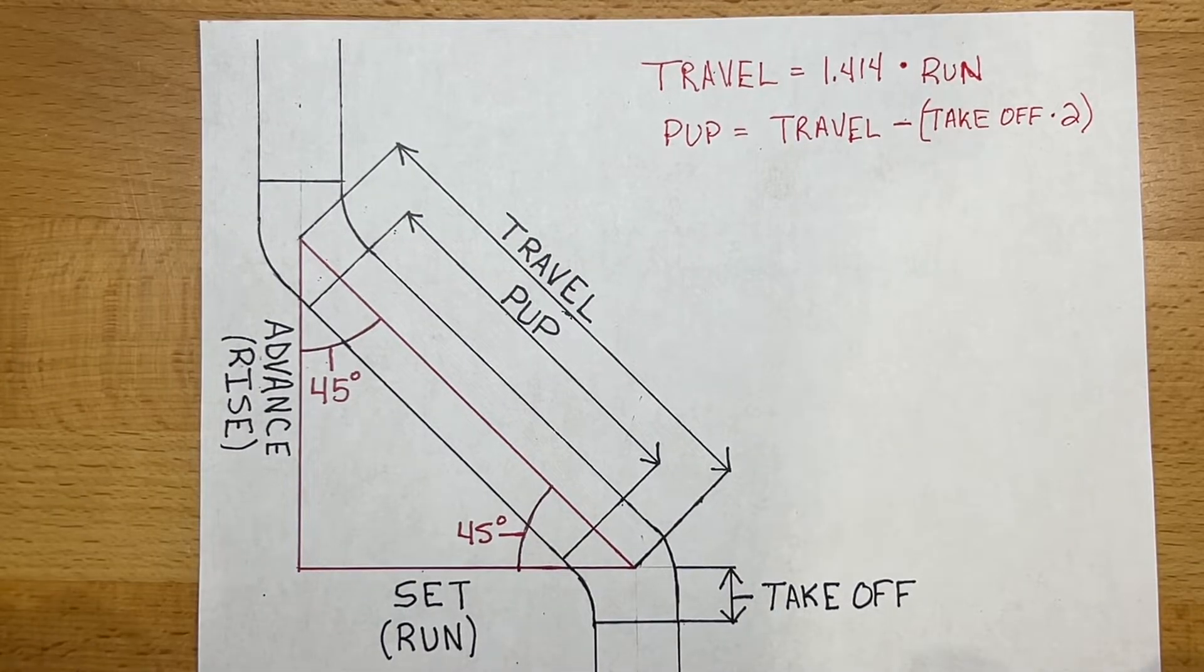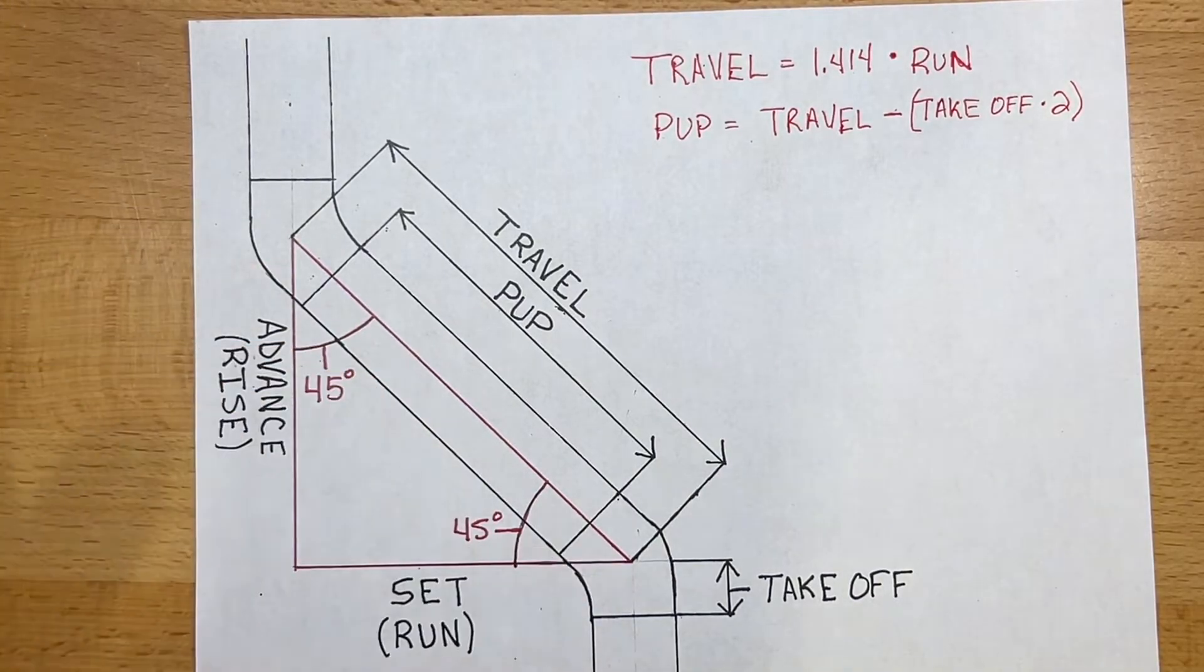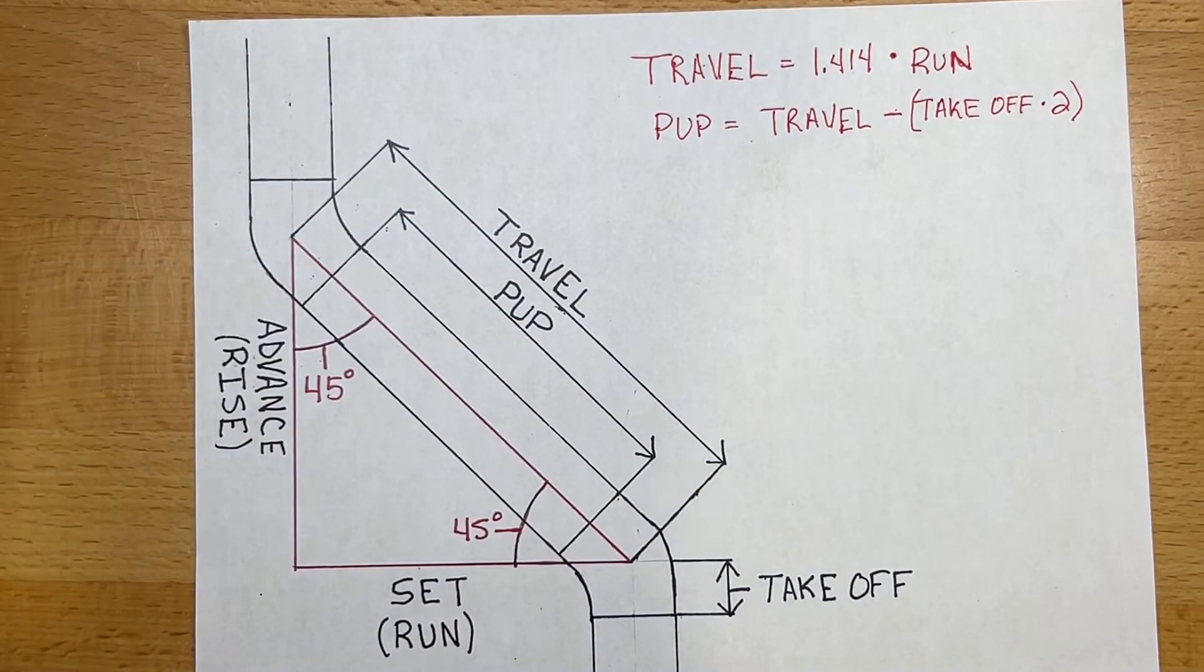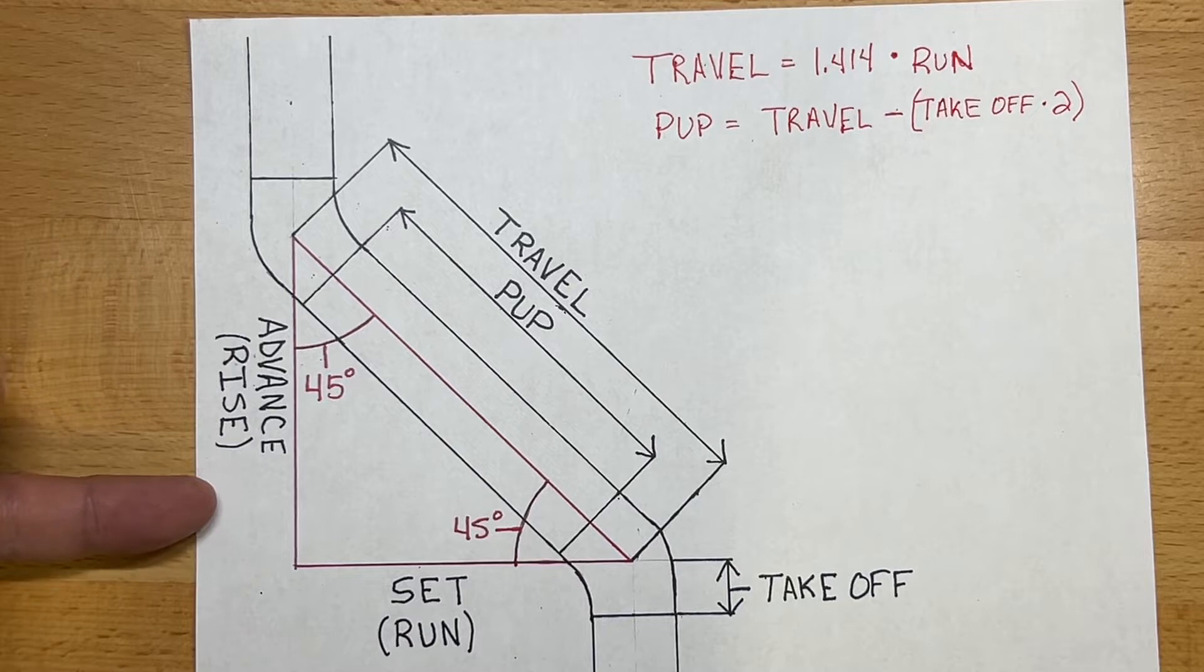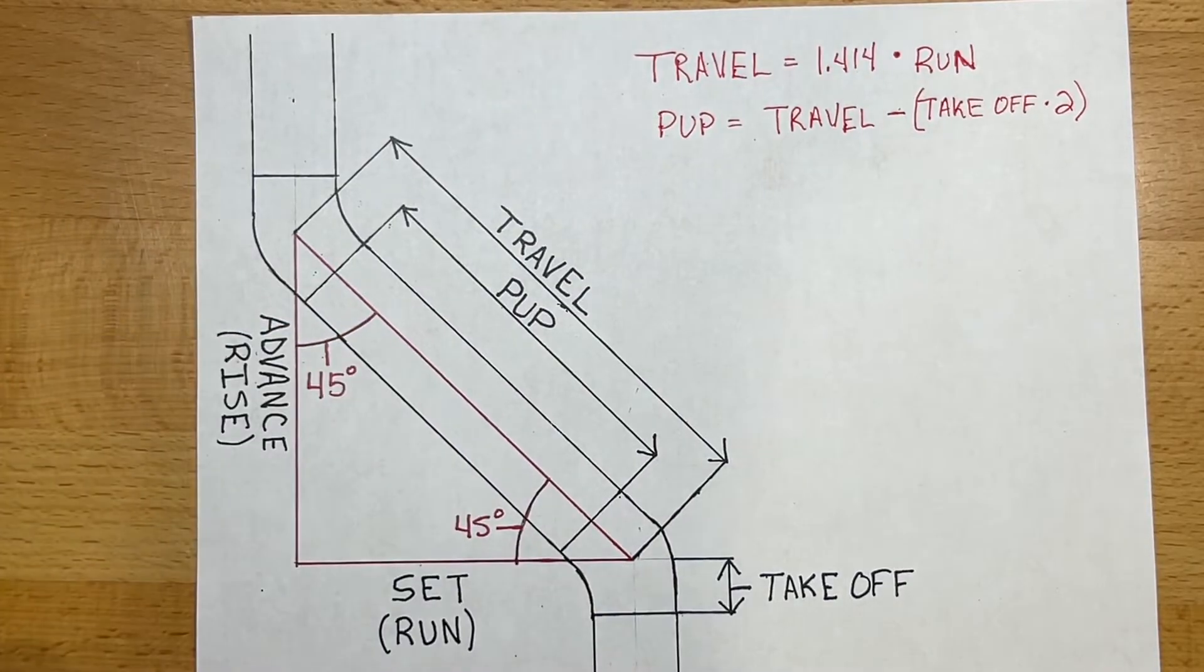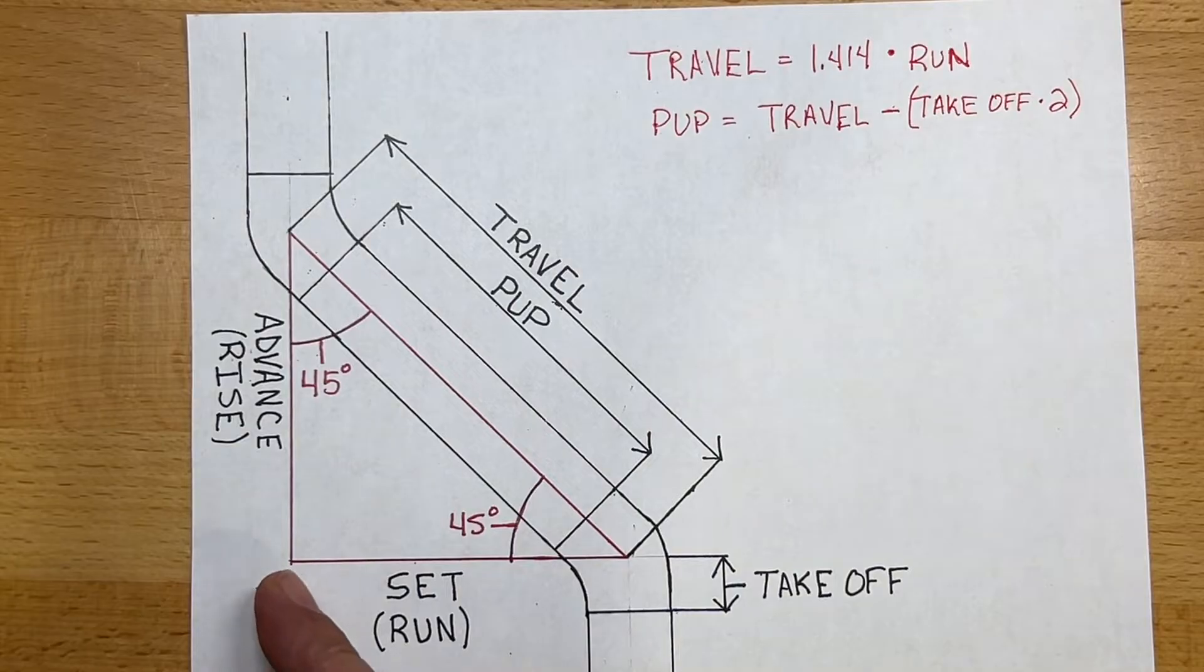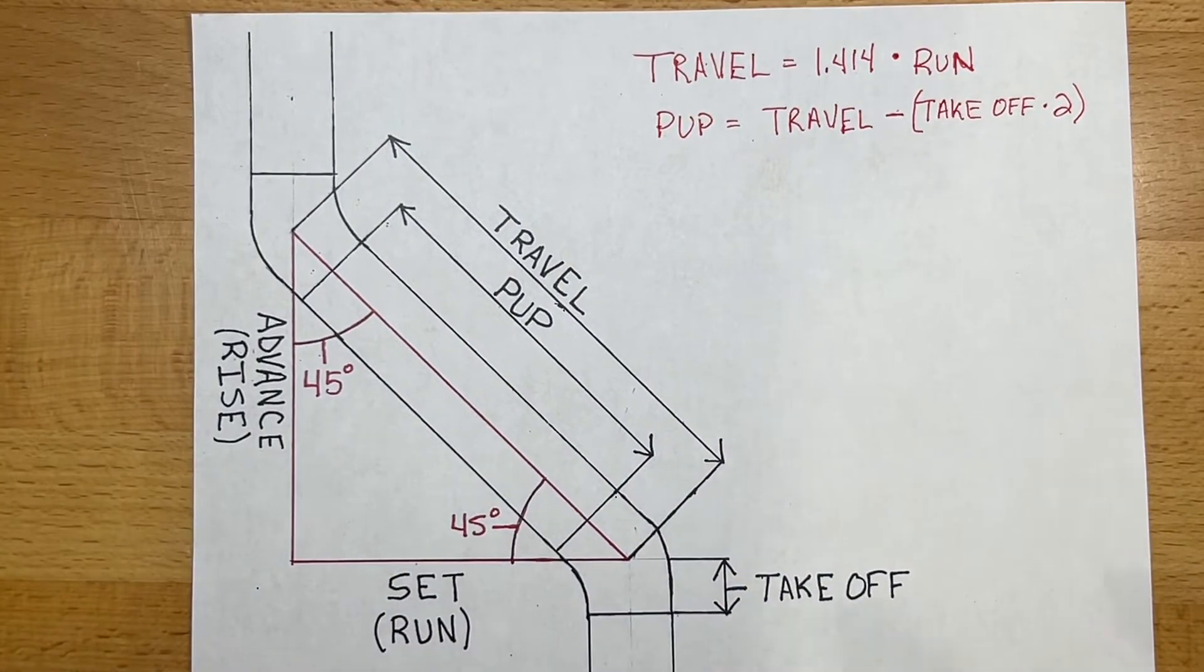What we're trying to do and where we measure from is from the very center of our fittings. So that distance is called the travel, and that's one of the things we're going to solve for. Then you have the advance or the rise, which is the distance between that point and the bottom point of your elbows. And then your set or your run is the distance side to side, the center line of your pipes shifted over.